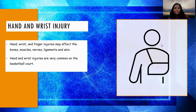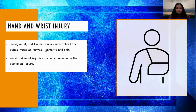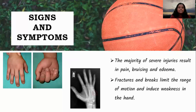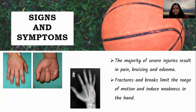As for fractured or broken fingers and wrists, a blunt force trauma to the finger or wrist — such as catching a ball incorrectly or breaking a fall — is the cause. As for the signs and symptoms, severe injuries result in pain, bruising, and edema.